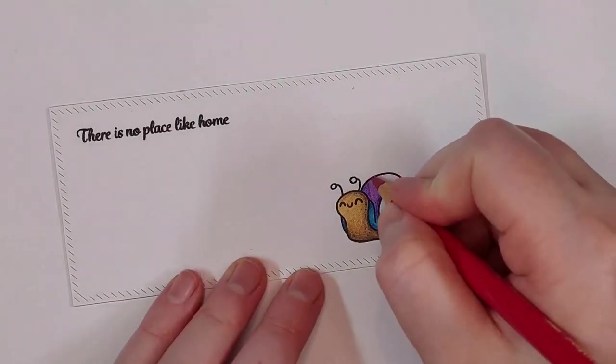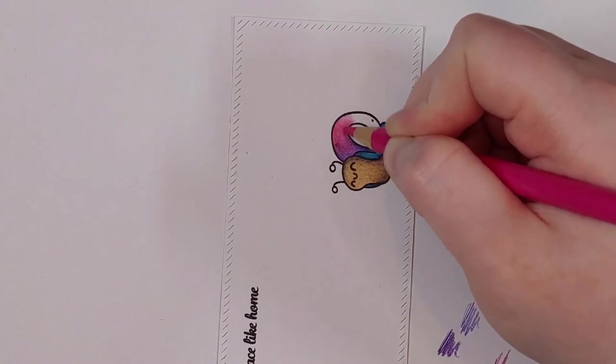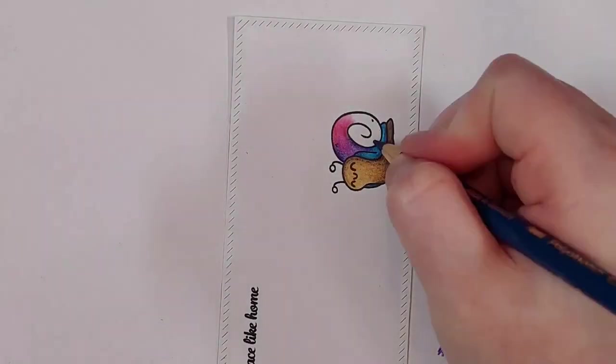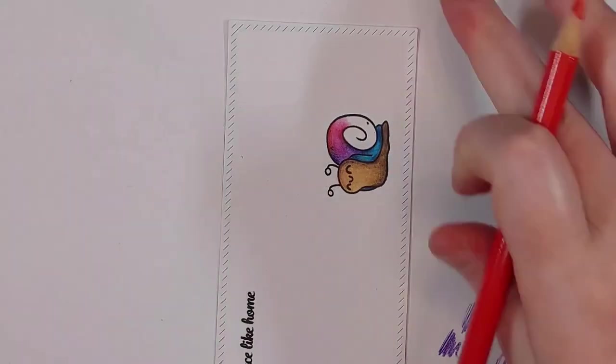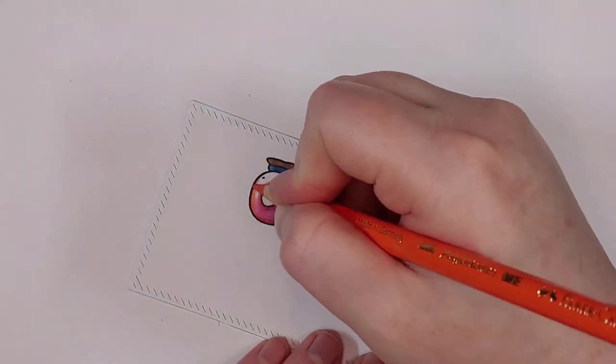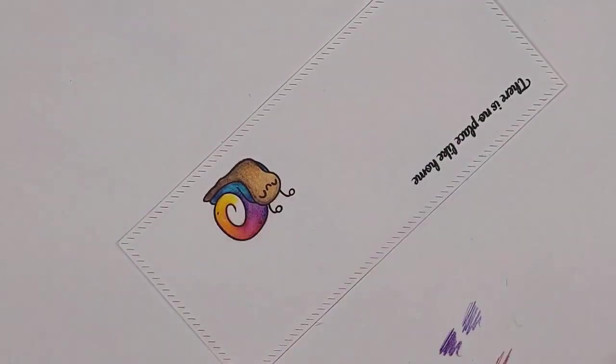Getting a rainbow blend like this with colored pencils is really easy. At the end of each color section you just taper up the intensity of the color and then layer the next color on top of it. Overlapping the colors just a little bit makes for a nice easy blend.